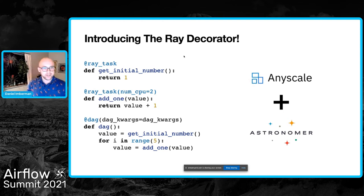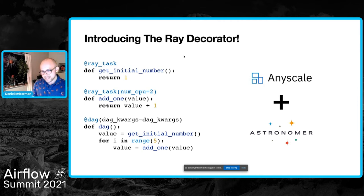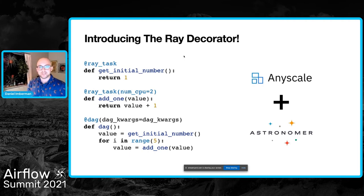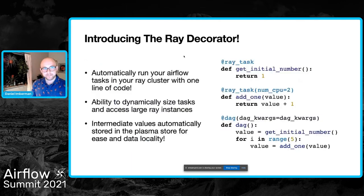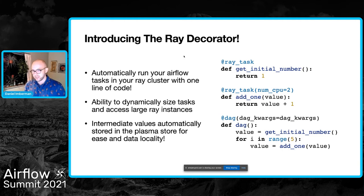It's a one-line decorator — you put it on any Python function and now you have an Airflow task that will run in Ray. Not only will it run in Ray, it will keep the data local between task runs. Ray has a fantastic object store called the Plasma store inside the Ray cluster, so between tasks you don't have to move your data to S3. You can have a multi-gigabyte data frame, and the only thing passed between tasks is a reference. That makes everything so much faster and cleaner. You can dynamically size resources — the Ray API lets you specify CPUs, GPUs, and many configuration options — and your intermediate values are automatically stored, which could be a massive speed-up depending on the size of your data.